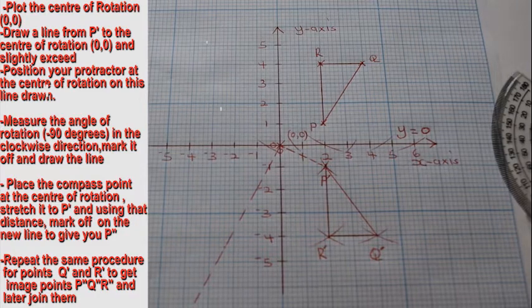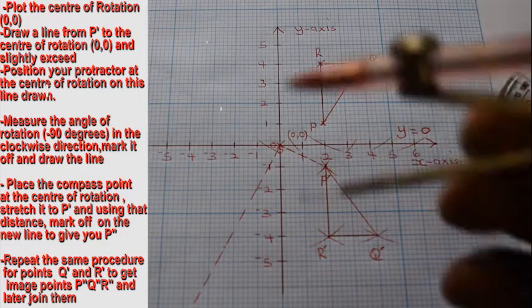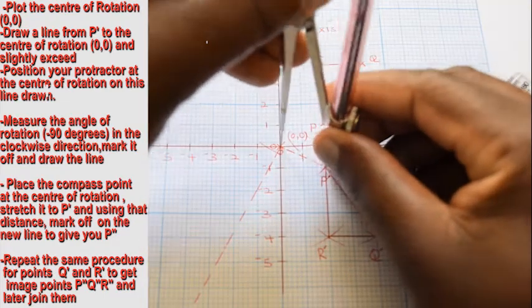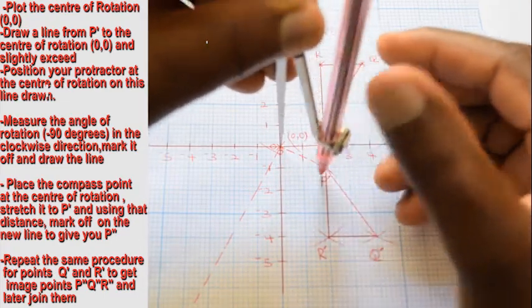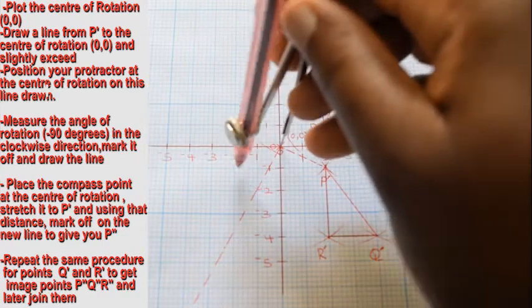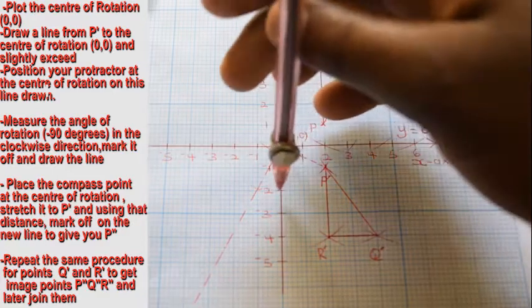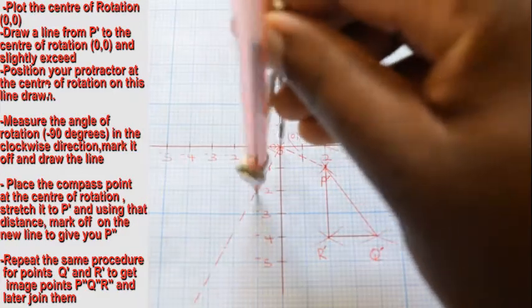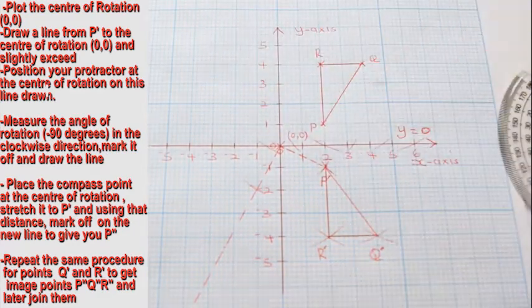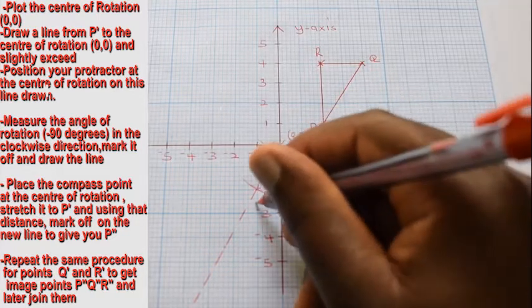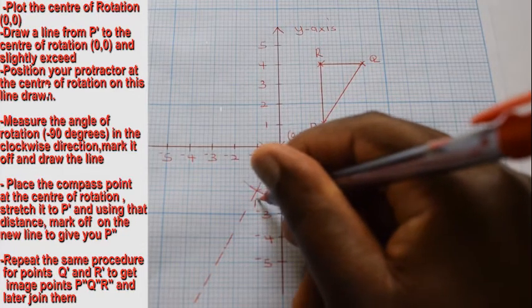Using a compass, place the pointer at the center of rotation. Stretch its radius up to point P'. Without lifting the pointer off the center of rotation, turn the compass and mark off the same radius along the image line.